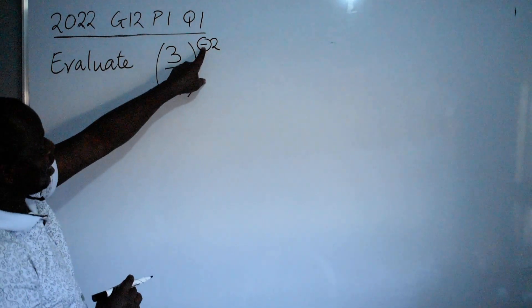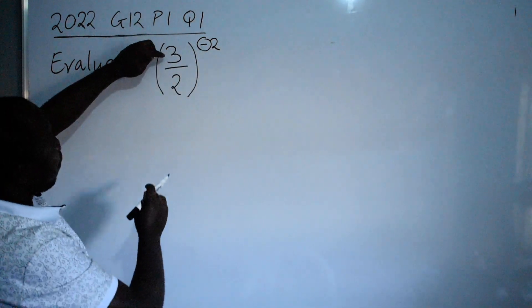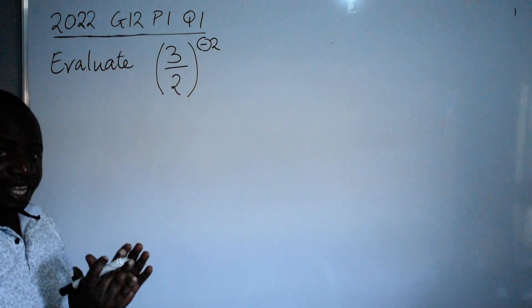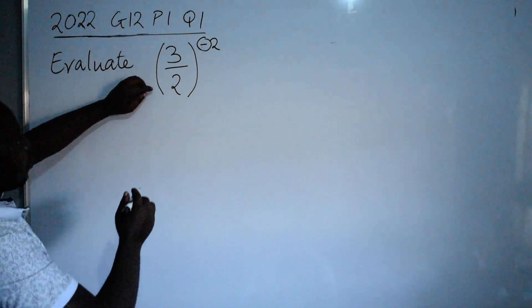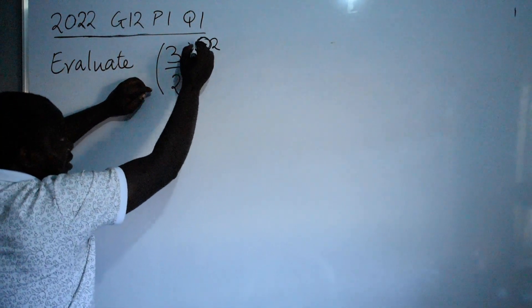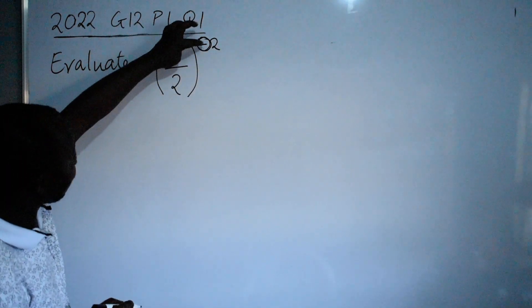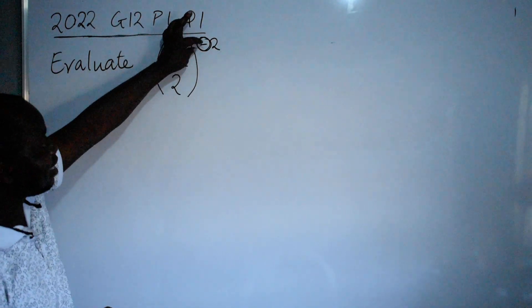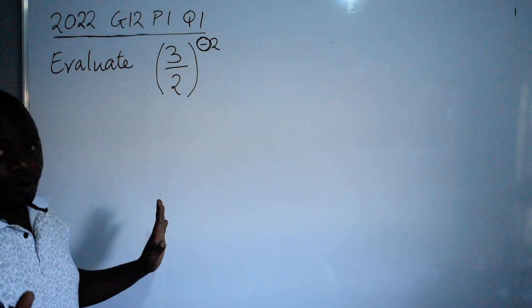This negative here is telling you to swap the fraction that you have inside the brackets. So the negative here, let me repeat myself, is telling you to swap these two numbers. That's the way the negative will go or disappear.